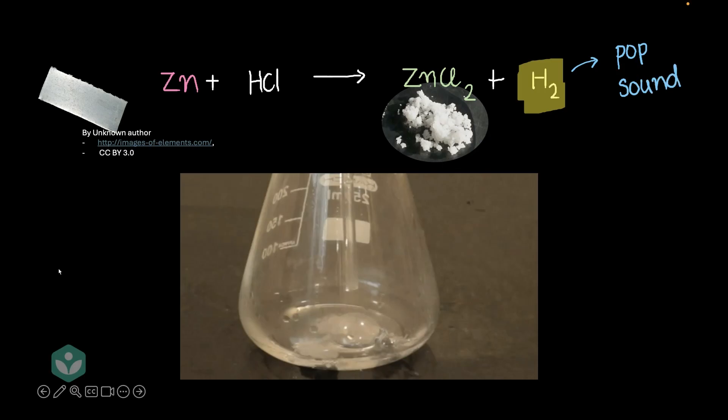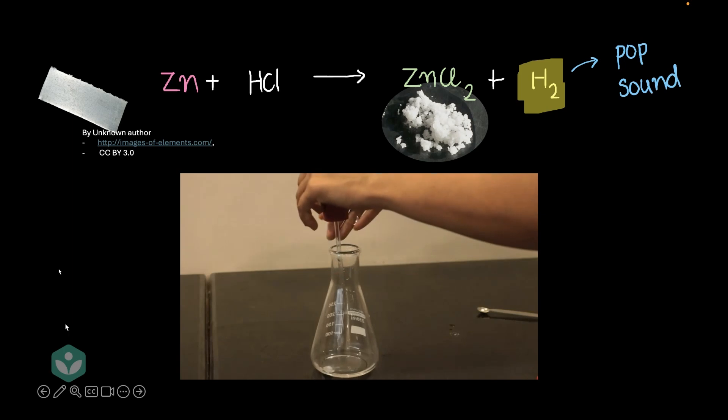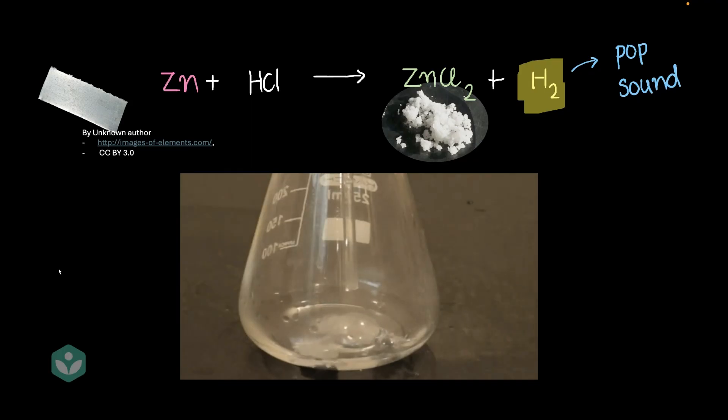Let me just play this reaction once again. You know that something's happening when we put the zinc into the HCl. There's bubbles being produced. So that means some gas is being produced. But how do you say for sure that this is hydrogen gas? That is a valid question.